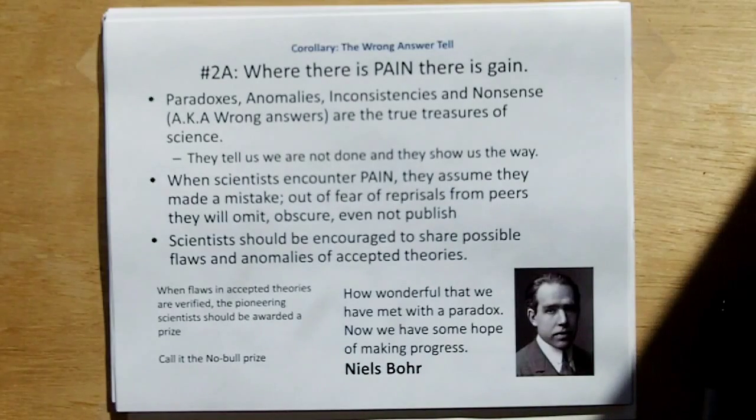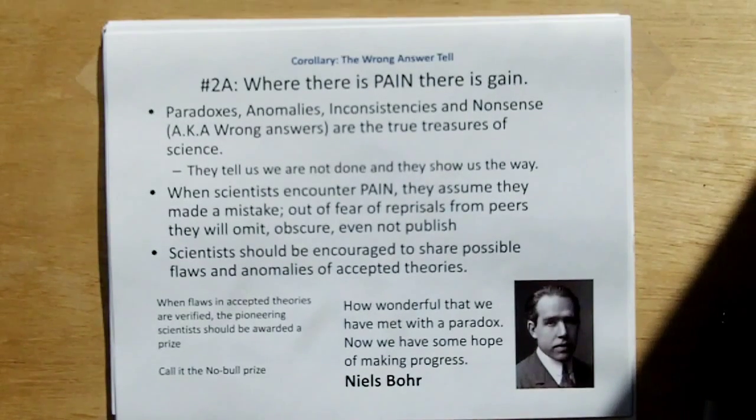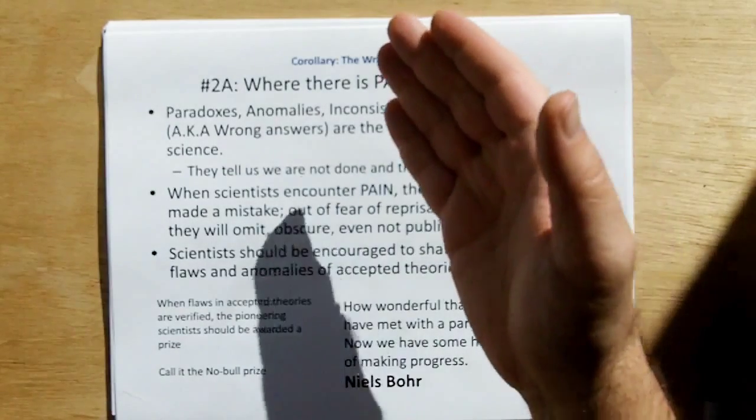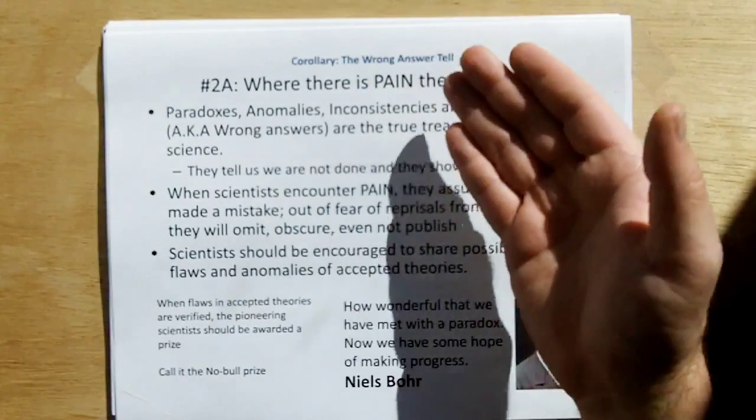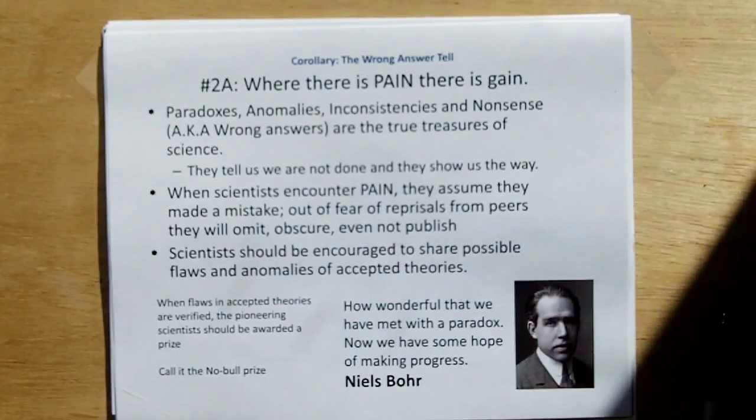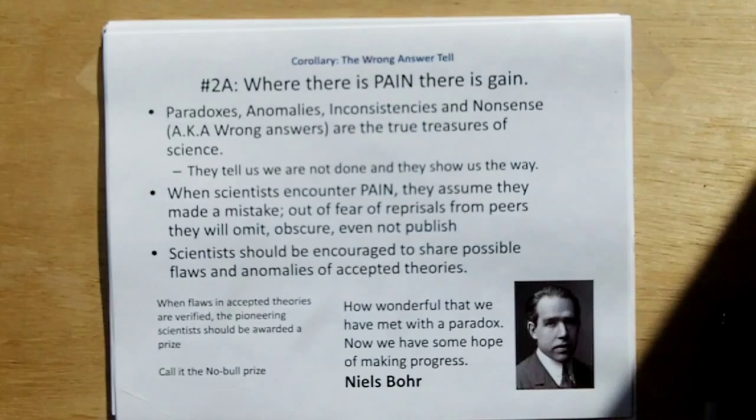And we're going to remember the Rule of Acquisition 2a, which is New Rule of Acquisition, which says where there is pain, there is gain. In other words, pain is an analogy for paradoxes, anomalies, inconsistencies, and nonsense. And Niels Bohr said, how wonderful that we've met with a paradox. Now we have some hope of making progress.